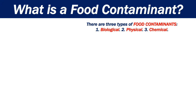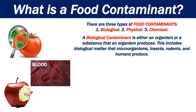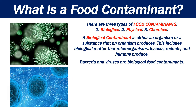There are three types of food contaminants: biological, physical, and chemical. A biological contaminant is either an organism or a substance that an organism produces. This includes biological matter that microorganisms, insects, rodents, and humans produce. Bacteria and viruses are common biological food contaminants.